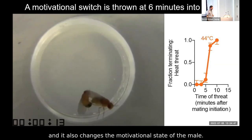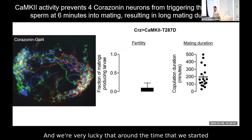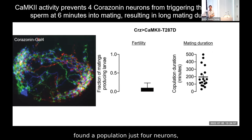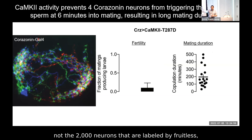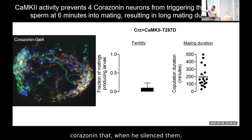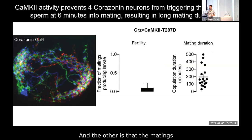We were very lucky that around the time we started the screen, Tim Taylor in David Anderson's lab found a population of just four neurons — labeled with the neuropeptide corazonin — that when silenced produced two telling phenotypes: the matings were infertile because sperm wasn't transferred, and the matings lasted for several hours.